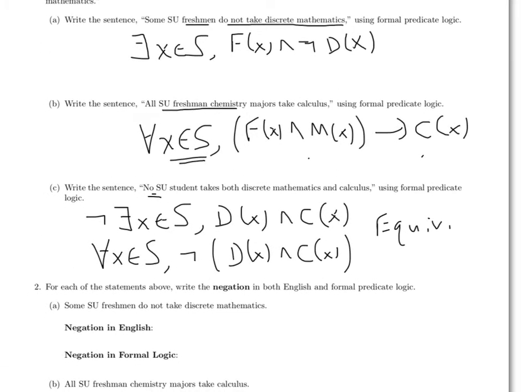So the original sentence here was, there is a student who is a freshman and doesn't take discrete math. So the negation of that logically will be, for every student, it is not the case that they're a freshman and they don't take discrete math. Now that gets some nots.